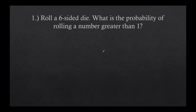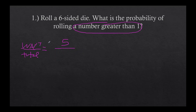Let's do some math. We're going to roll a six-sided die. What is the probability of rolling a number greater than one? We're talking about what we want to have happen over the total possibilities. On a six-sided die, how many numbers are greater than one? Five — two, three, four, five, six. So we have five possibilities. How many total possibilities? Six. Our fraction is five-sixths. You could write it as a decimal, and you have an 83% chance of rolling a number greater than one.